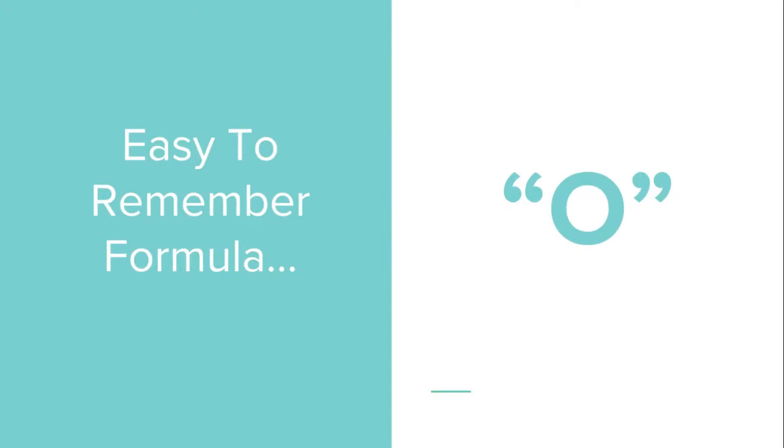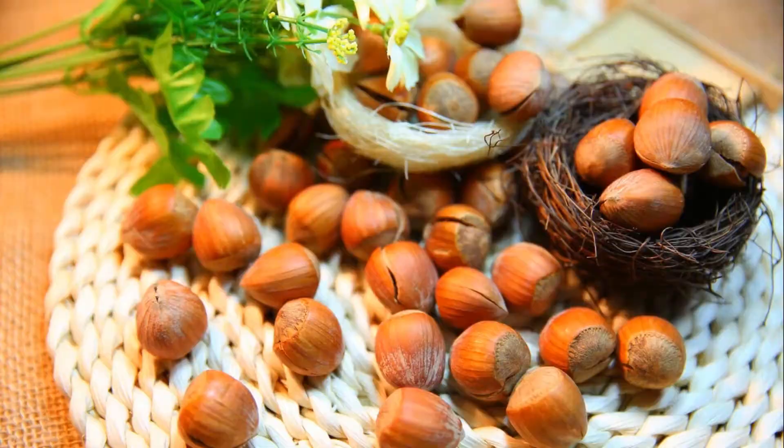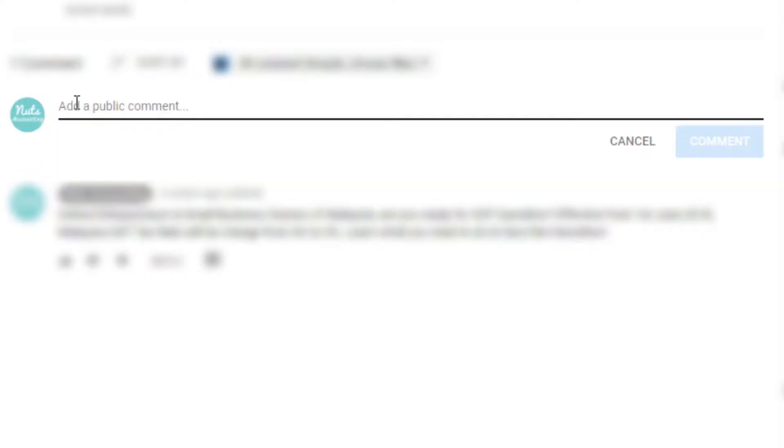Here comes my easy-to-remember formula — one alphabet is all you need. Super easy, just remember one alphabet. You don't even need to write it down. The alphabet is O — just one O. It looks like a hazelnut. If you think this formula is easy and you can remember it, give me an O in the comments below.